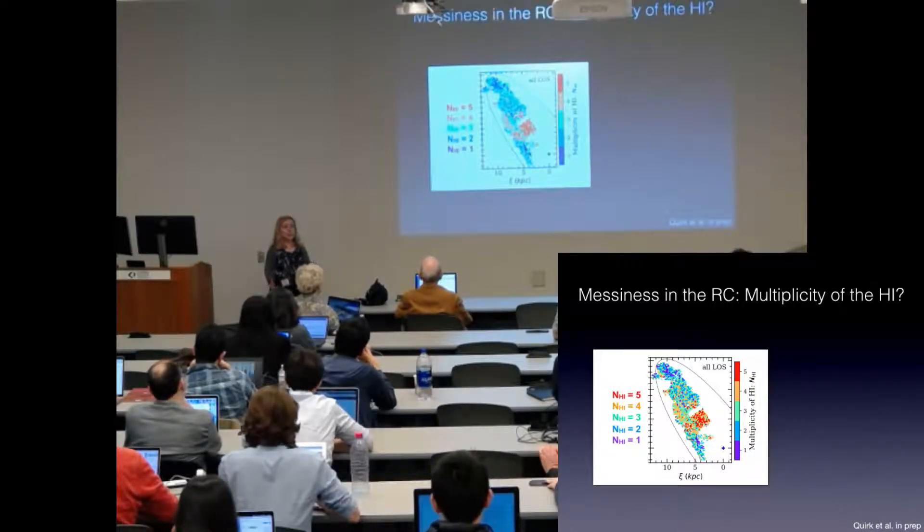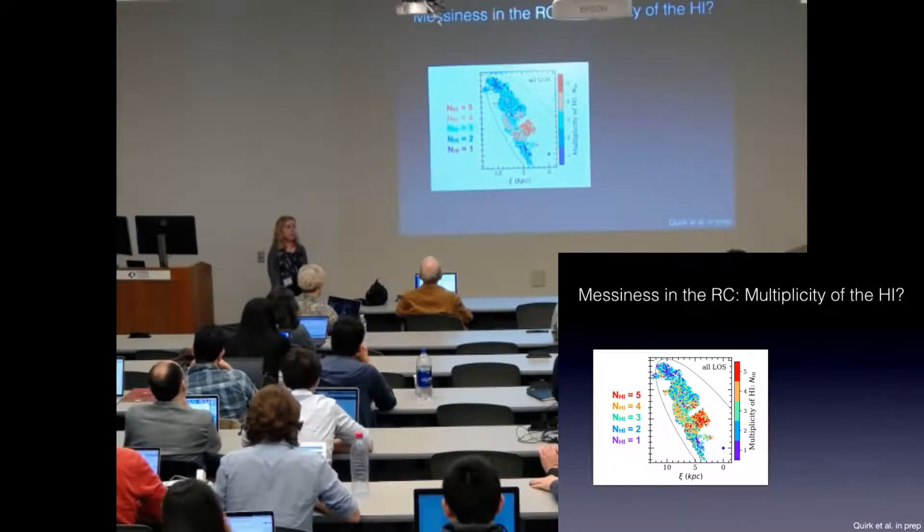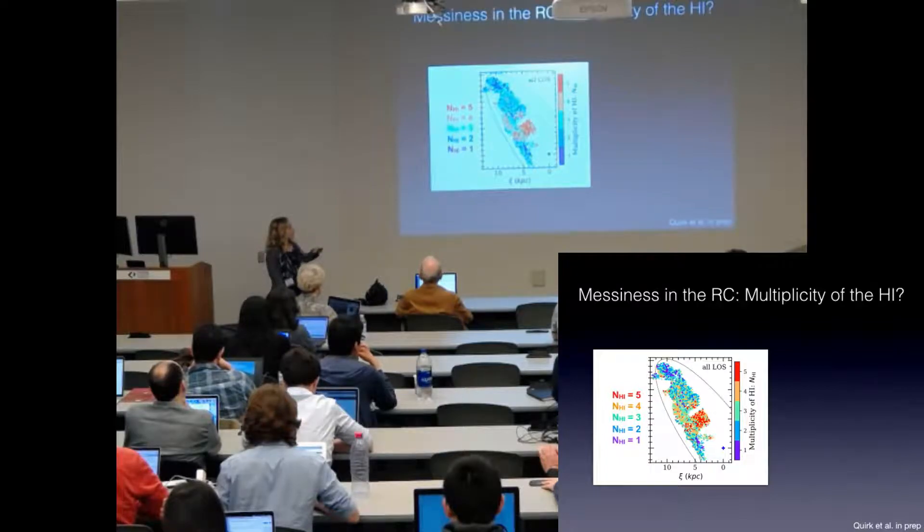Because M31 has a very complex geometry, it has multiple warps in it. When you look along one line of sight, you might be passing through multiple clouds of H1. This gives you a number of peaks in the component. When Chemin took this data, he had a model that allowed for up to five velocity peaks in the H1 spectrum.